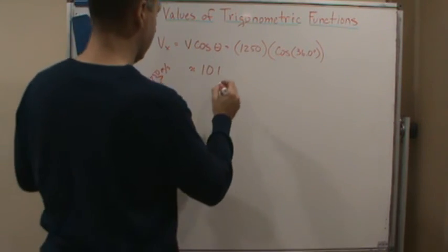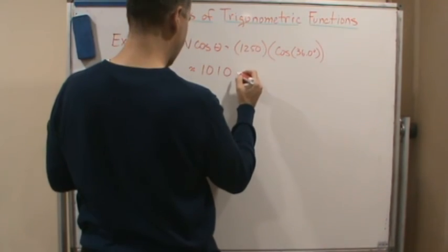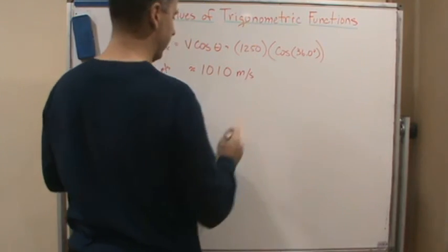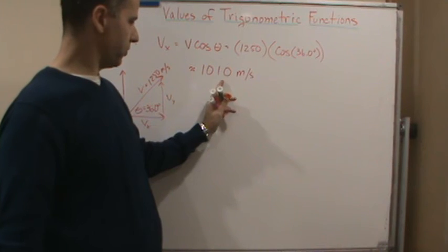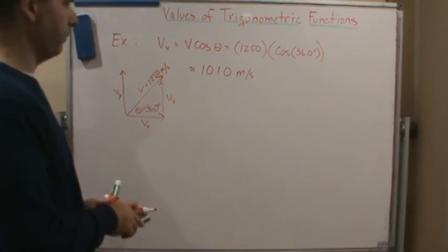Yes, 1010 meters per second. So three significant digits. You start here: one, two, three. There's your three significant digits. That's where we end.